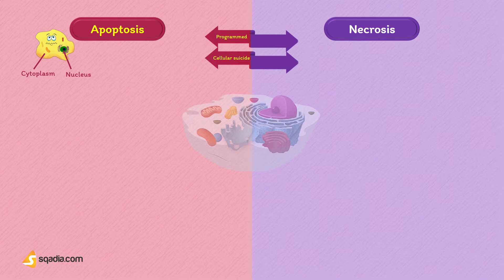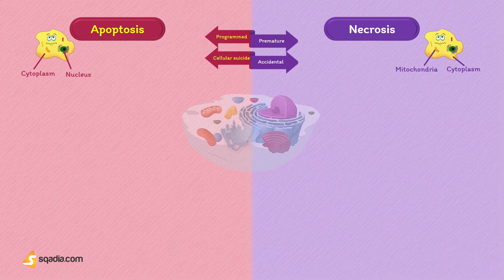Necrosis is the premature cell death, or accidental cell death, that occurs through the swelling of cytoplasm along with mitochondria, followed by cell lysis.